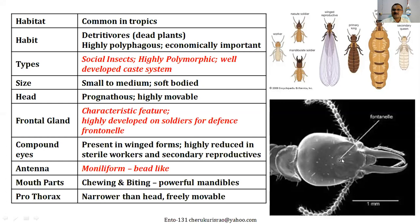The compound eyes are very well developed in the winged forms but highly reduced in wingless forms. The antenna is monoliform — a bead-like, string-of-beads arrangement — called monoliform antenna. The mouthparts are highly developed chewing and biting type, because they have to chew and cut dead wood. They have well-developed mandibles for cutting, grinding, and chewing.